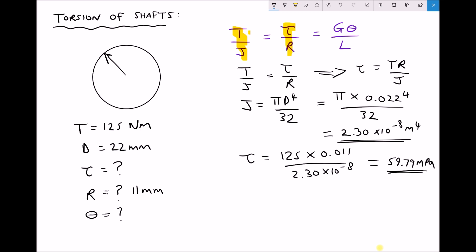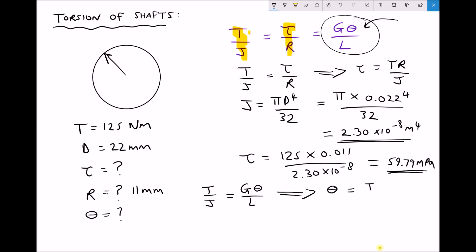Next we calculate the angle of twist. We have a choice: we can use T/J = Gθ/L, or τ/R = Gθ/L. I'm going to use T/J = Gθ/L and rearrange to make theta the subject. Multiplying each side by L and then dividing each side by G gives θ = TL / (J × G).